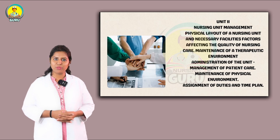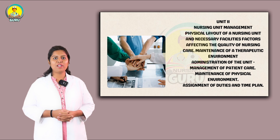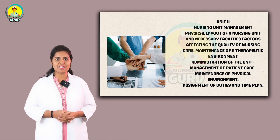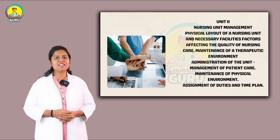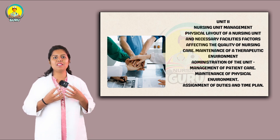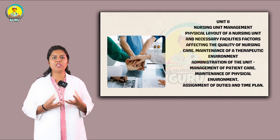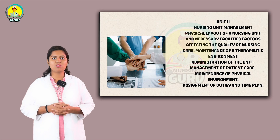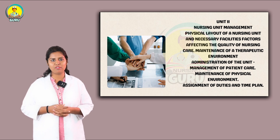Next is Unit 2: Nursing Unit Management. Topics include physical layout of a nursing unit and necessary facilities, and factors affecting the quality of nursing care — what kind of nursing care we need to give and what factors affect that. This is a 5-mark question and is very important for the examination.